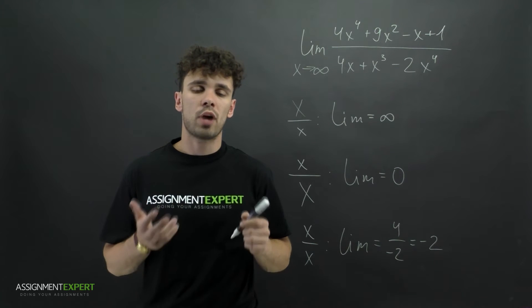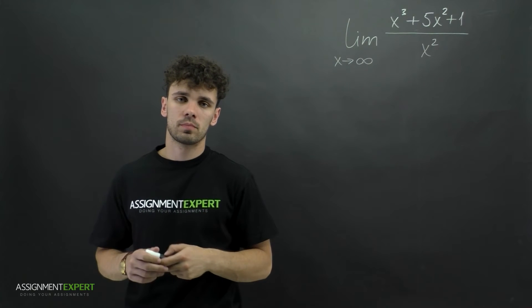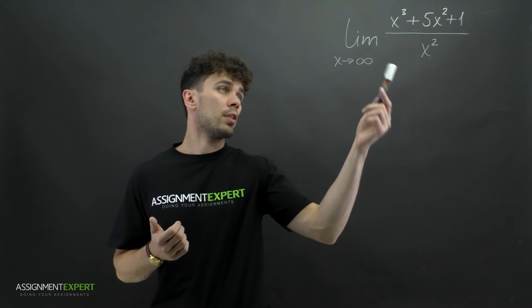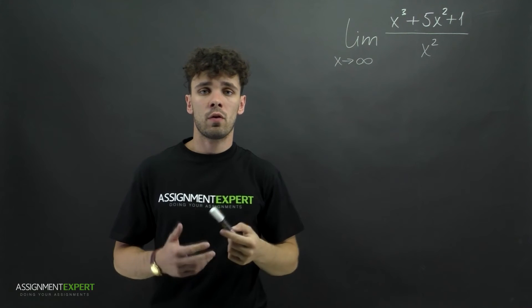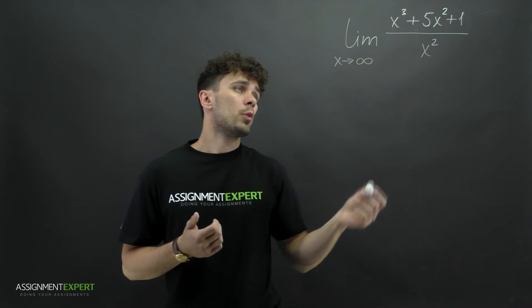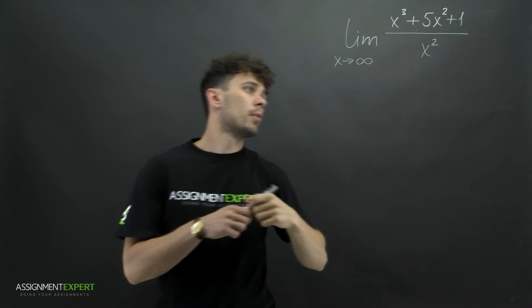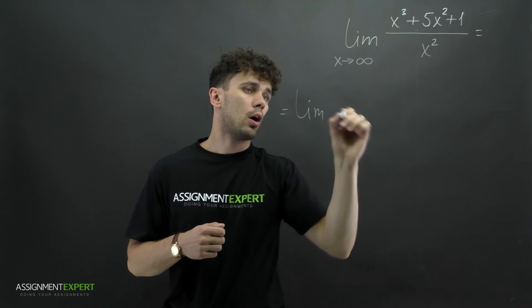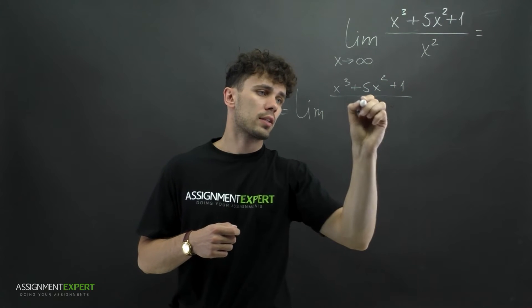So now let's have a look at some practical examples. Here's our first example. As I said earlier, we need to search for the highest power of x. In this example, the highest power is x cubed — it is above the line, therefore the result will be infinity. To see how it works, we need to divide the numerator and denominator by this highest power, x cubed.